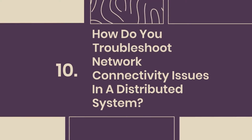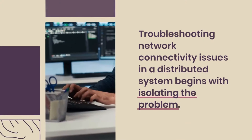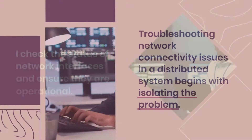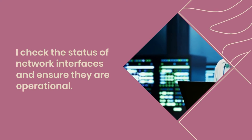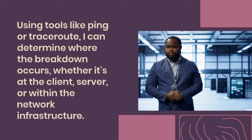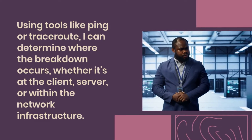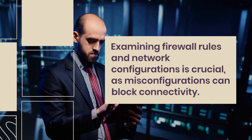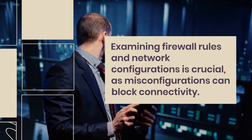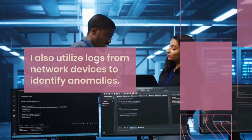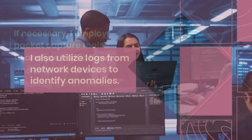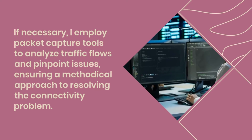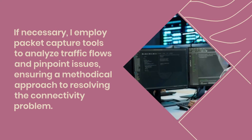Question 10: How do you troubleshoot network connectivity issues in a distributed system? Troubleshooting network connectivity issues begins with isolating the problem. I check the status of network interfaces and ensure they are operational. Using tools like ping or traceroute, I can determine where the breakdown occurs, whether it's at the client, server, or within the network infrastructure. Examining firewall rules and network configurations is crucial, as misconfigurations can block connectivity. I also utilize logs from network devices to identify anomalies. If necessary, I employ packet-capture tools to analyze traffic flows and pinpoint issues, ensuring a methodical approach to resolving the connectivity problem.